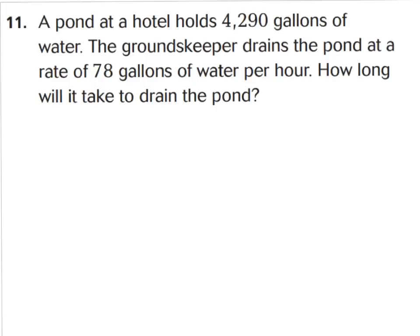Let's take a look at number 11. A pond at a hotel holds 4,290 gallons of water. The groundskeeper drains the pond at a rate of 78 gallons of water per hour. How long will it take to drain the pond? We know that the hotel pond holds 4,290 gallons. It can drain 78 gallons each hour. If we know it can do 78 for each hour, and there's this many gallons, it's going to take a while. So let's use repeated subtraction to figure this one out. We can set up our problem, 4,290 divided by 78.